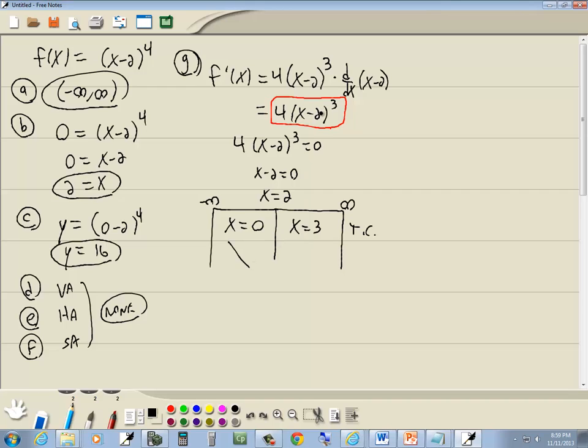If I put 3 in here, 3 minus 2 is 1, 1 to the third power is 1 times 4 is positive. So this is increasing. So this is going to be decreasing from negative infinity to 2, and then it's increasing from 2 to positive infinity.